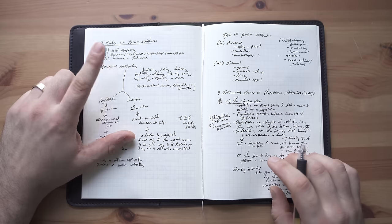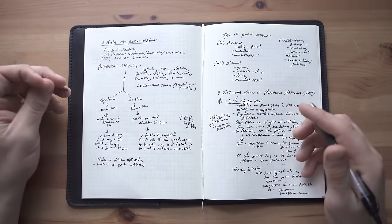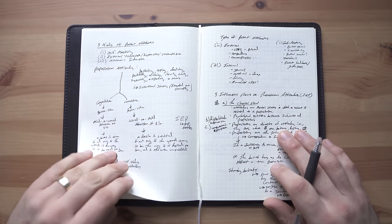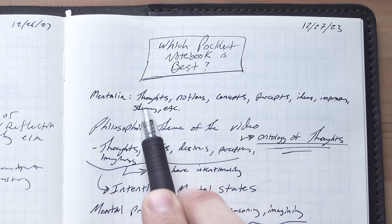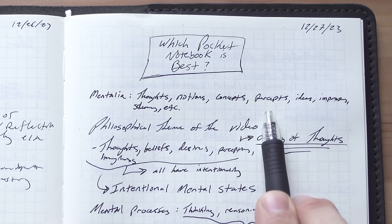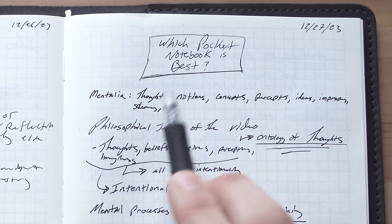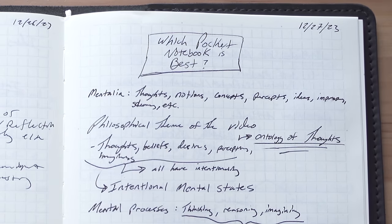So let's start first with internal ideation notebooks. The second and third type of pocket notebooks, they're going to all deal with mentalia. That is thoughts, notions, concepts, percepts, ideas, impressions, schemas, etc. These are mental things.